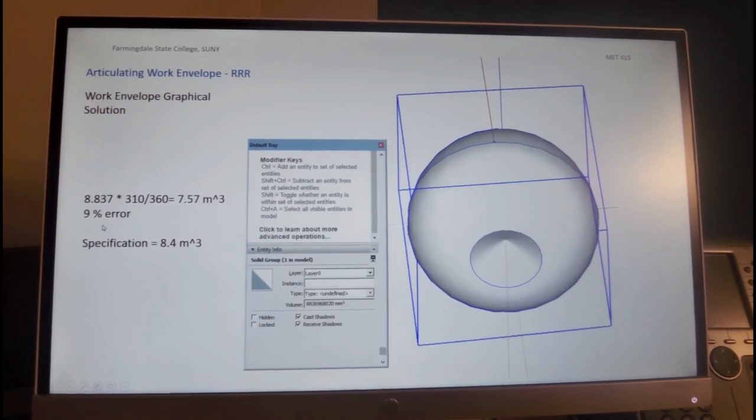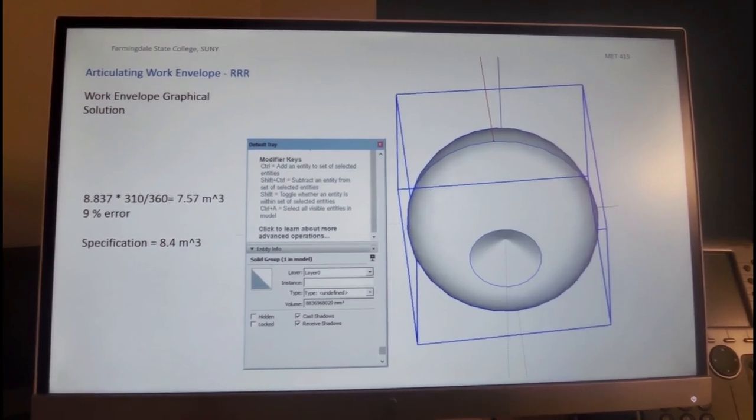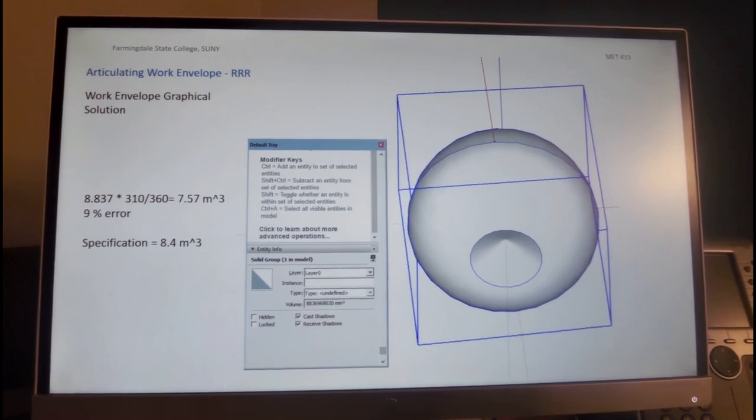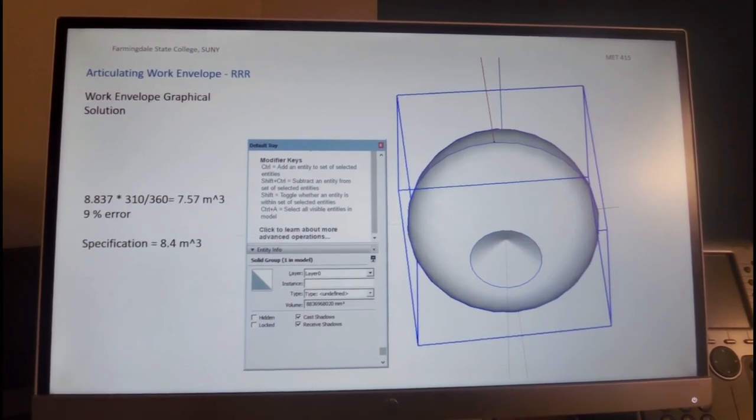So this basically concludes our presentation, showing you different techniques, either graphical or analytical, to estimate a work envelope of a robot. Thank you.